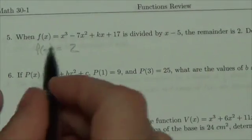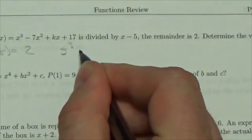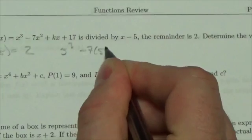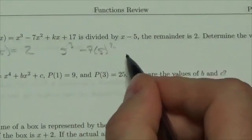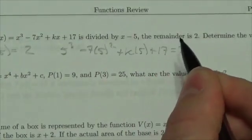So now, what we would do is we would plug in 5 into this. So, we're going to get 5 cubed minus 7 times 5 squared, plus k times 5 plus 17, and this should equal 2 here.